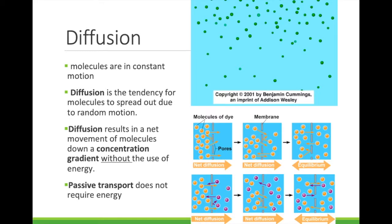They go from an area of high concentration to an area of low concentration. Look at the pictures on the bottom right. The top picture shows the yellow spheres spreading out. They are highly concentrated on the left side of the membrane. They move from left to right, from an area of high concentration to an area of low concentration. The difference in concentration is called the concentration gradient. The bigger this concentration gradient is, the faster the diffusion will occur.